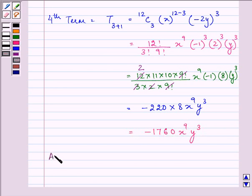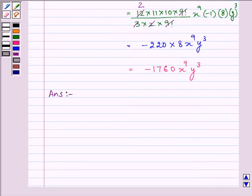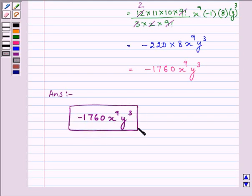And hence, the answer is, the fourth term is -1760 x^9 y^3. This is the fourth term of the binomial expansion of (x - 2y)^12.